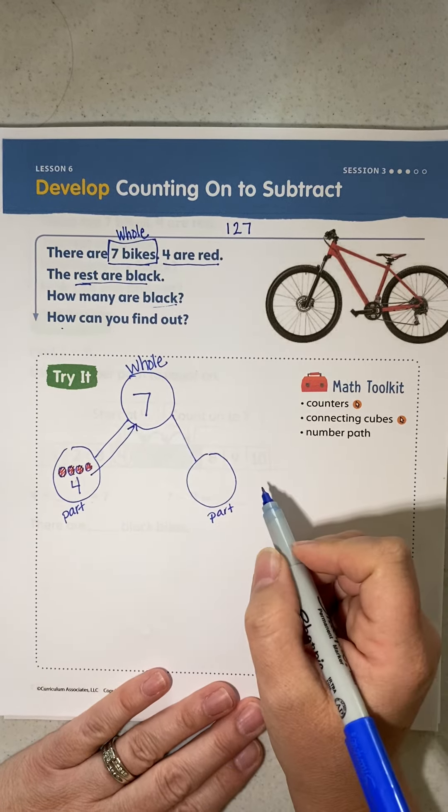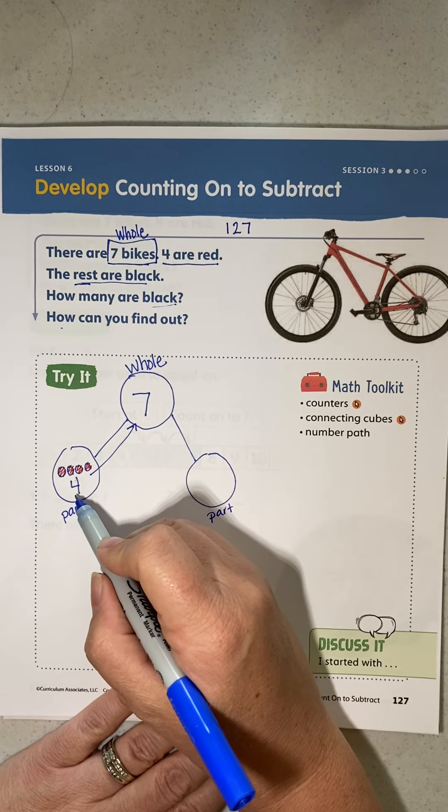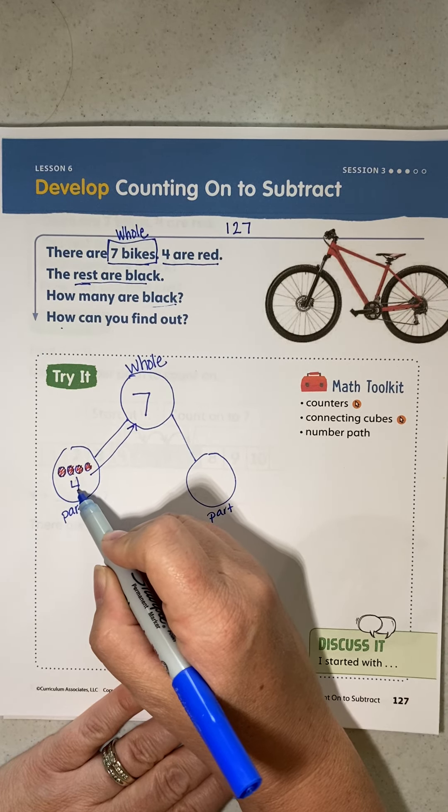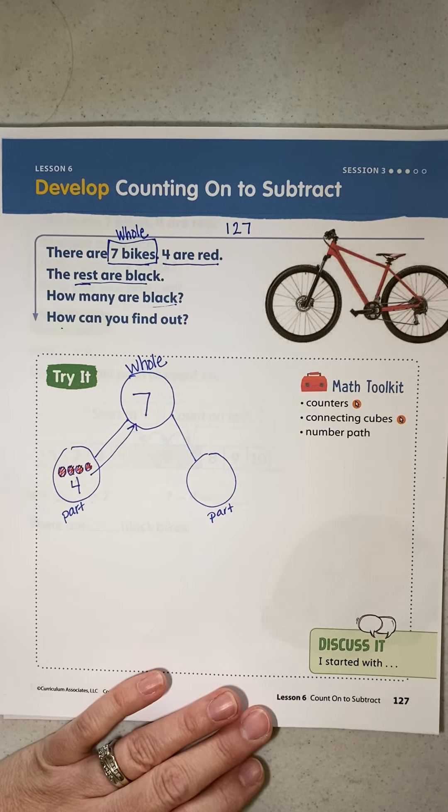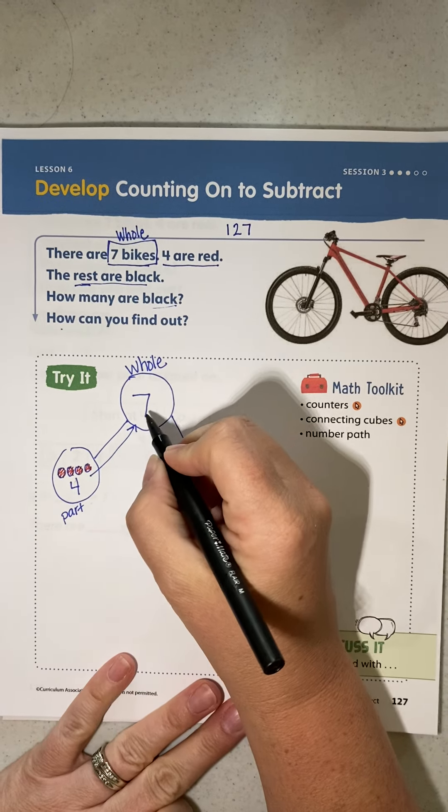Up to the whole. Okay, so we have the number four, and we can count on to the number seven.